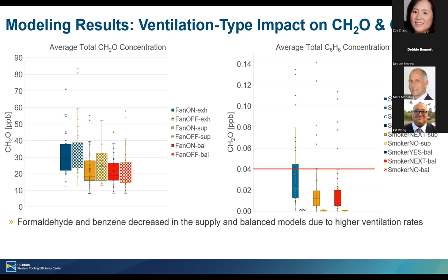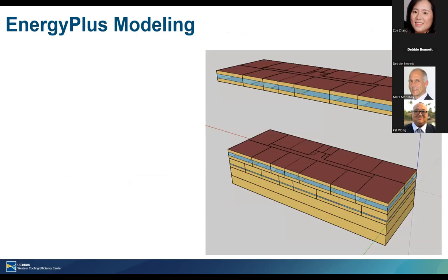For formaldehyde and benzene by ventilation type: formaldehyde concentrations are driven by ventilation rate, so since supply and balanced systems have higher ventilation rates, they show lower concentration distributions than exhaust-only systems. When looking at concentration being transferred from neighboring units, the exhaust system has slightly higher transfer, while both supply and balanced have less inter-unit transfer. Now switching to the EnergyPlus building model.